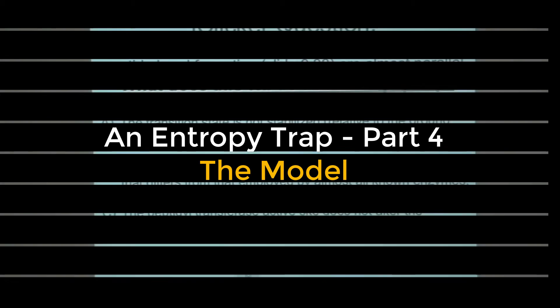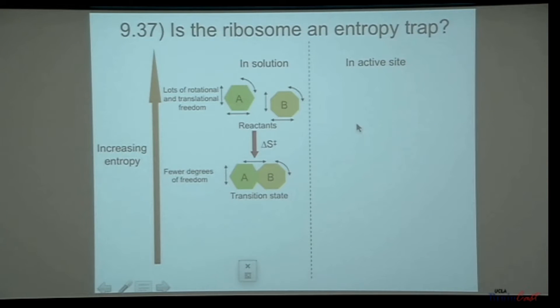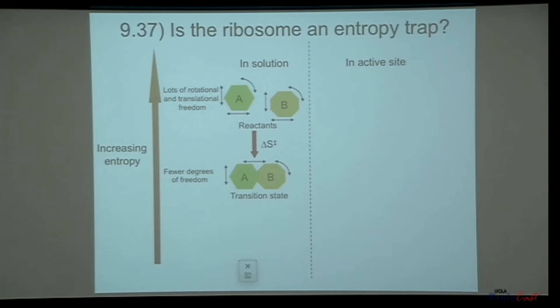So how is the ribosome then increasing the activation entropy? This slide here attempts to illustrate what's going on. It's the idea that the ribosome is an entropy trap — in particular, the idea that the ribosome traps the substrates in a low-entropy conformation.